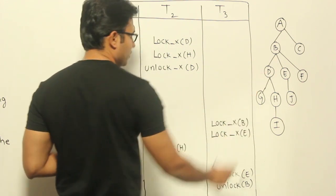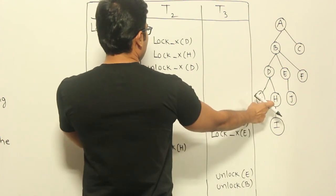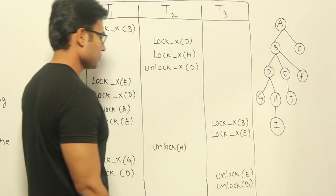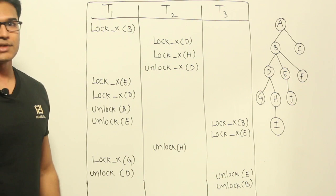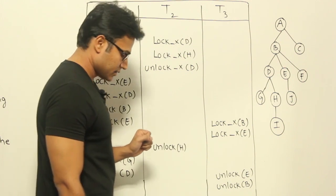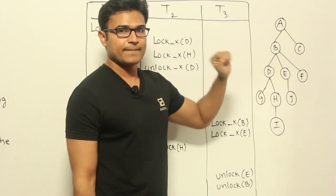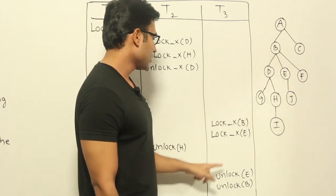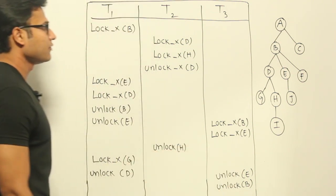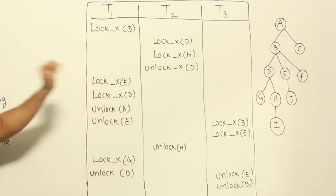Now for T2: D is locked, then H is locked — allowed since D is its parent. Then D is unlocked, then H is unlocked. For T3: it starts with B — allowed. After B, E is locked — allowed since B is its parent. Then E is unlocked and B is unlocked. Unlocking can be done in any order — that's not an issue.